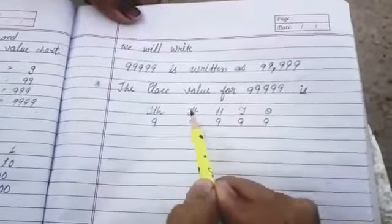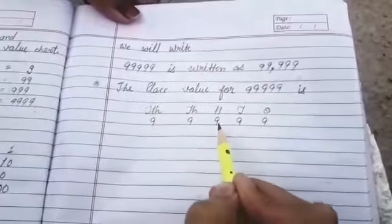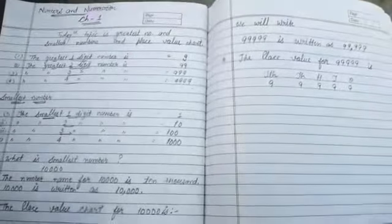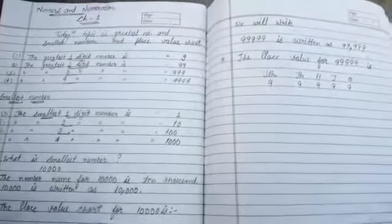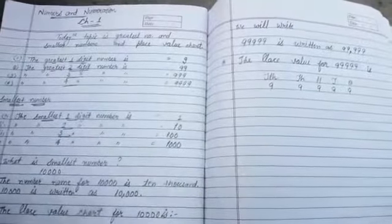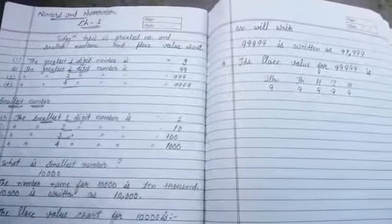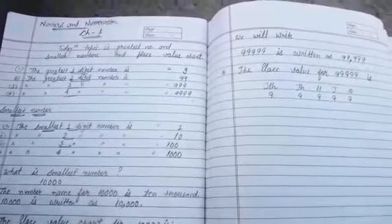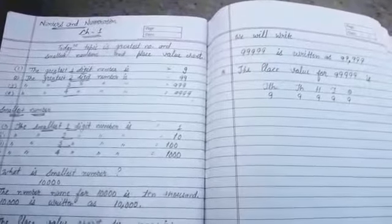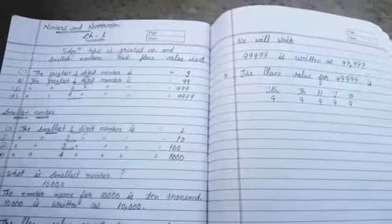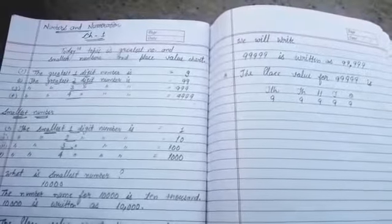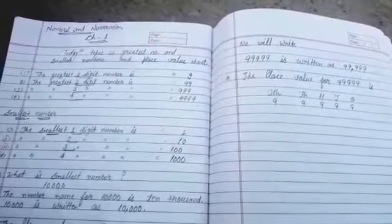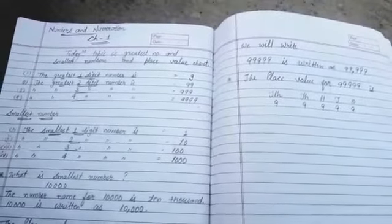So what was our topic? Greatest number smallest number and place value chart. So you have to do your homework. You have to tell greatest 5 digit number, smallest 5 digit number and their place value and their number name you have to write. And if you have any query then you can call me and by whatsapp you can consult me. Thank you so much.